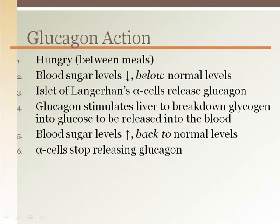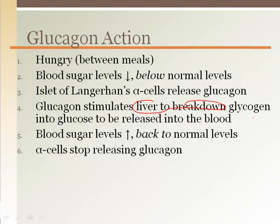When we're hungry between meals, that's when glucagon kicks in. Blood sugar levels drop below normal, so any deviation from normal triggers a hormone response. In this case, if it's below normal levels, the islets of Langerhans alpha cells release glucagon. Glucagon stimulates the liver to break down that glycogen storage form, increasing blood sugar levels back to normal. The alpha cells will stop releasing glucagon once normal levels are achieved again.